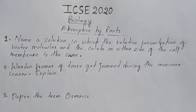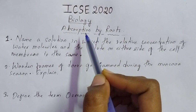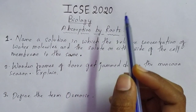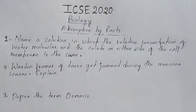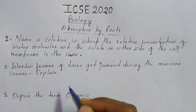Hi guys, this is Varsha and you are watching Mastermind. In this session we are going to discuss important questions from biology from the chapter Absorption by Roots. All these questions are important for your ICSE 2020 board examination, so please go through them carefully. These are the type of questions which are mostly repeated in your board examinations every year, and it is also going to be a kind of revision for you all. So let us begin.